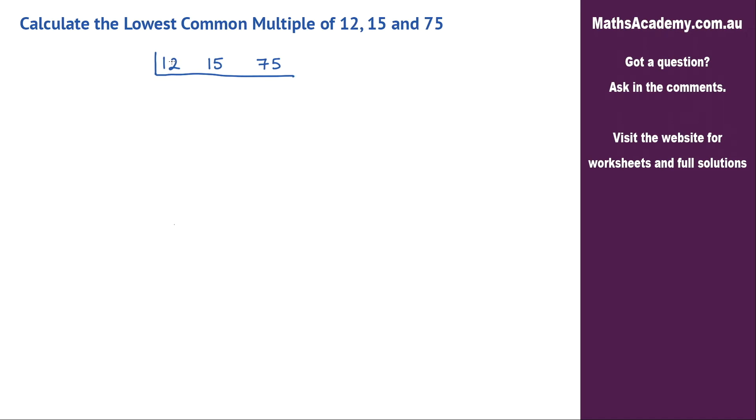I have got an even number here, so I know one of the factors will be a two. Two goes into 12 six times. Two does not go into 15, so write down the 15. And two does not go into 75, so let's just write down the 75.